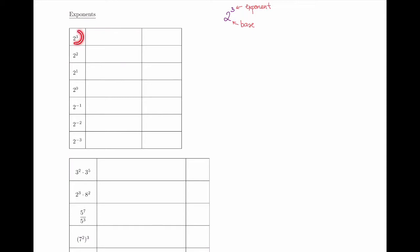So 2 cubed simply stands for a shorthand way of saying I would like to multiply 2 by itself three times. So I have 2 times 2 times 2, which is 8. 2 to power 2 means I multiply 2 by itself twice, which is 4. 2 to power 1 means I multiply 2 by itself once. 2 to power 0 means I multiplied 2 by itself no times, which gives me 1.